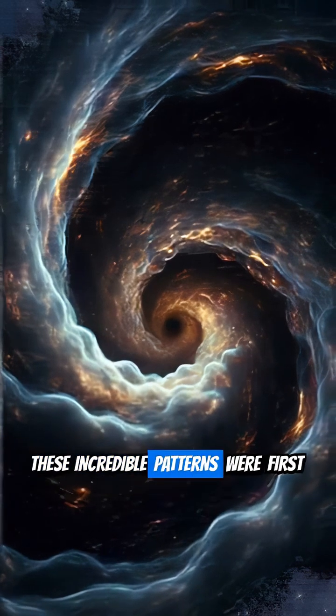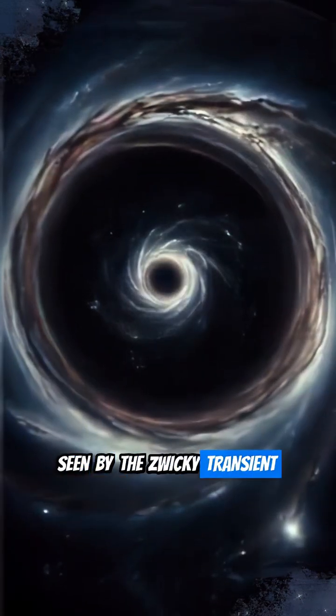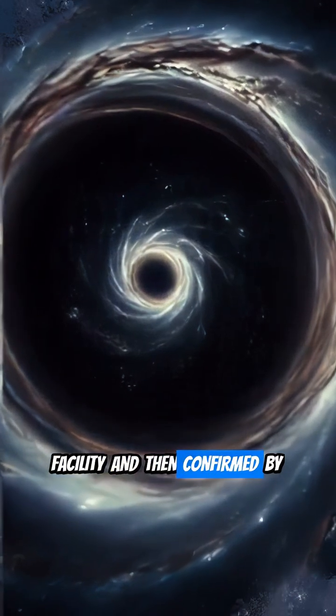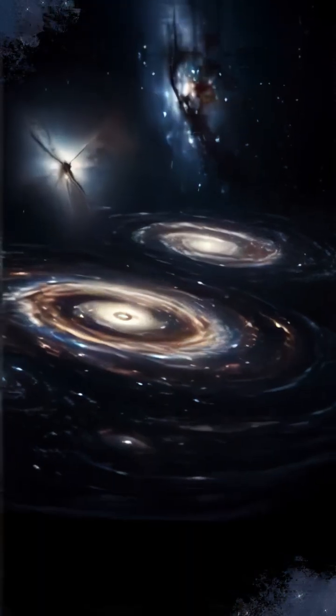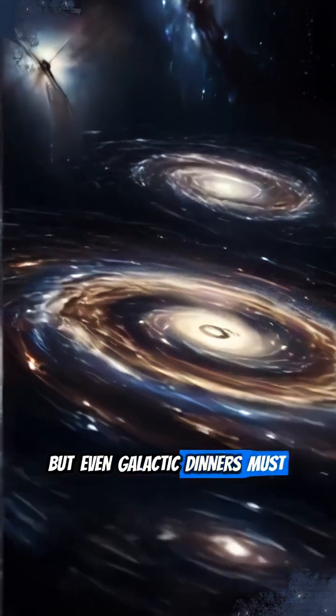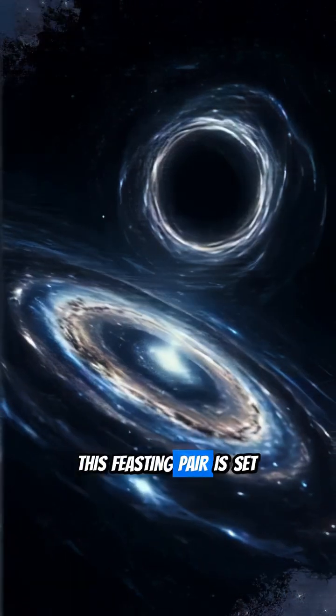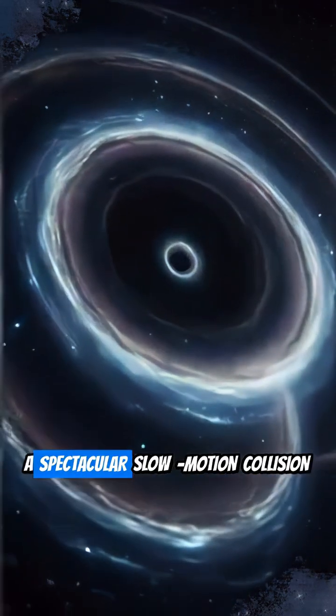These incredible patterns were first seen by the Zwicky Transient Facility and then confirmed by NASA's Swift Telescope. But even galactic dinners must end. This feasting pair is set to crash into each other in about 70,000 years, a spectacular slow-motion collision in the making.